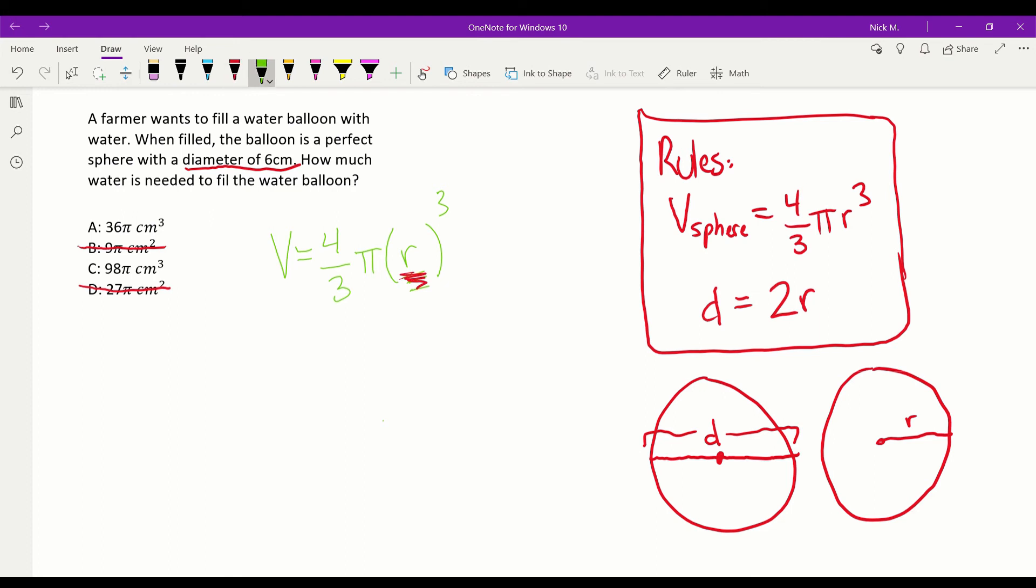So, moving along, we use this d equals two r to solve that. And our d diameter is six. Well, and then that equals two r. Divide each side by two, you get three equals r. And then you plug that guy up into there.